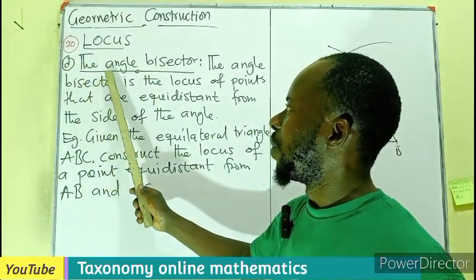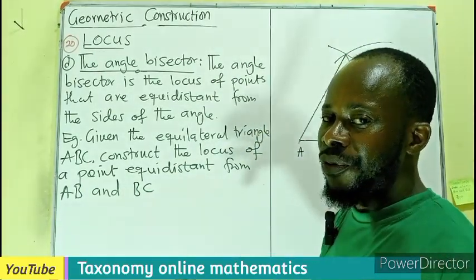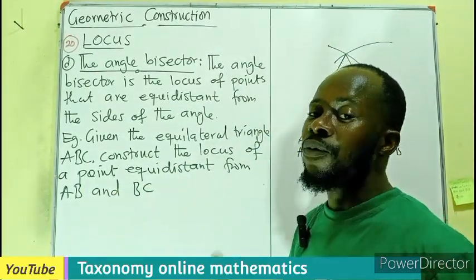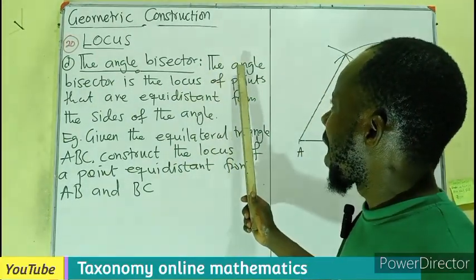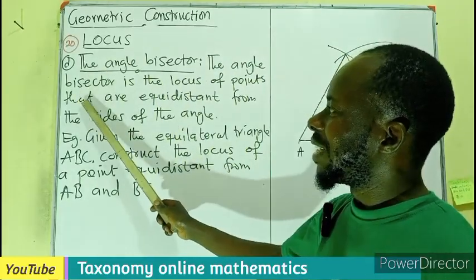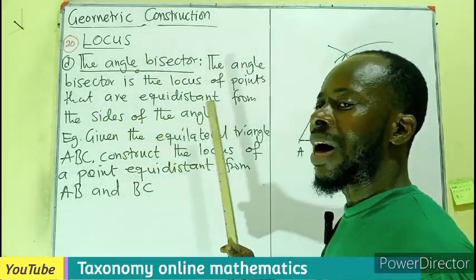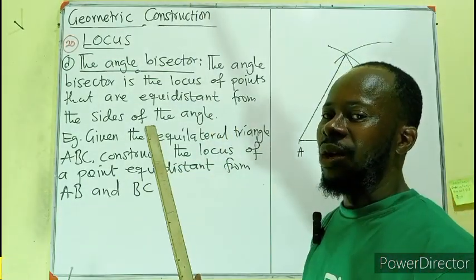We are on the fourth type, which is the angle bisector. The angle bisector is the locus of points that are equidistant from the sides of an angle.